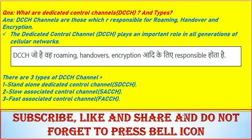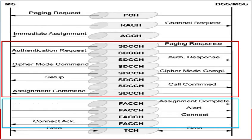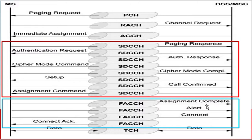Now let's look at what these channels do in 2G. Looking at the architecture diagram, we have the MS (mobile station), BSS, and MSC. SDCCH is used between the MS and the network side for paging response, authentication request, authentication response, ciphering mode command, ciphering mode complete, setup, call confirm, and assignment command. FACCH handles assignment complete, alerting, connect, and connect acknowledge.